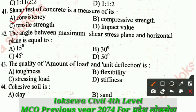Question number 42: The angle between the maximum shear stress plane and the horizontal plane is equal to: A - 15 degrees, B - 30 degrees, C - 45 degrees, D - 50 degrees. The correct answer is C: 45 degrees.